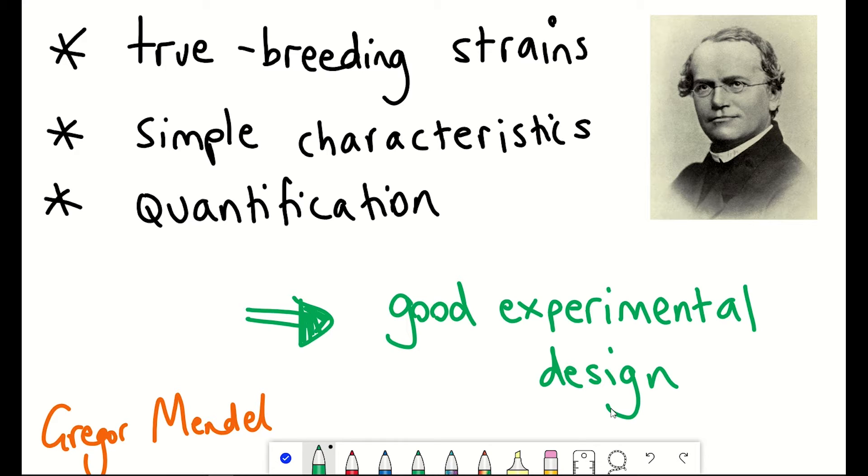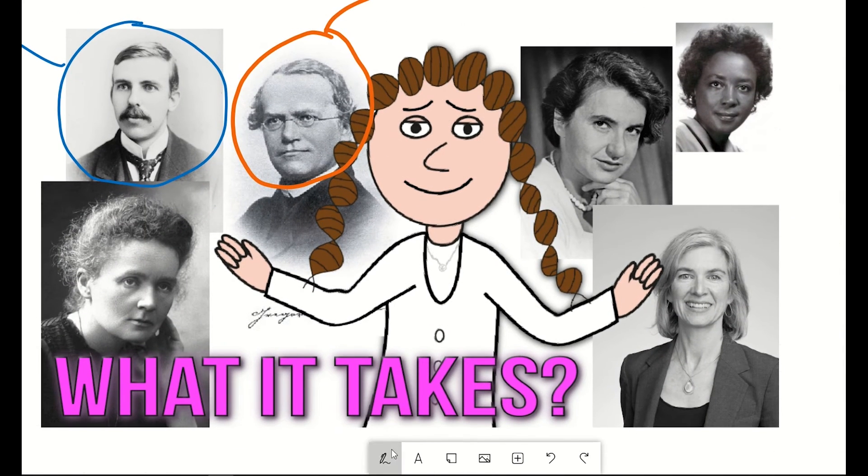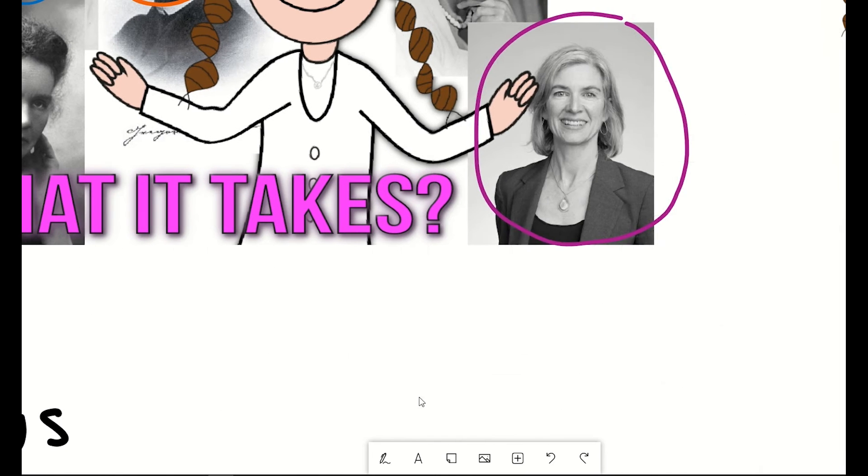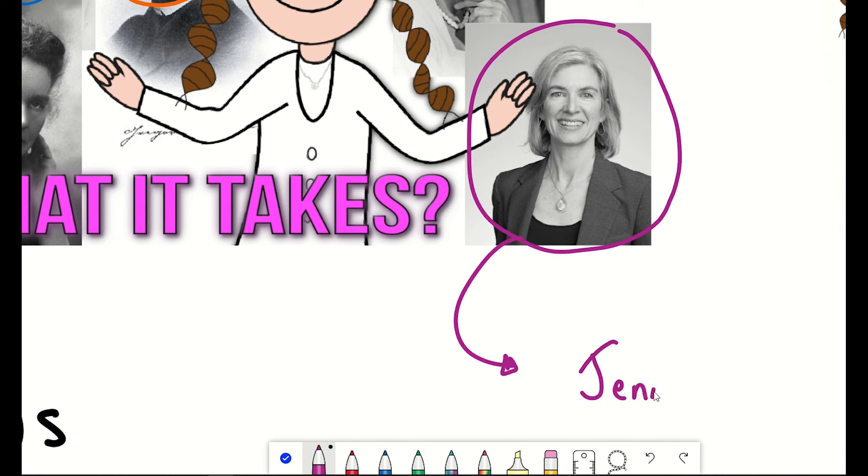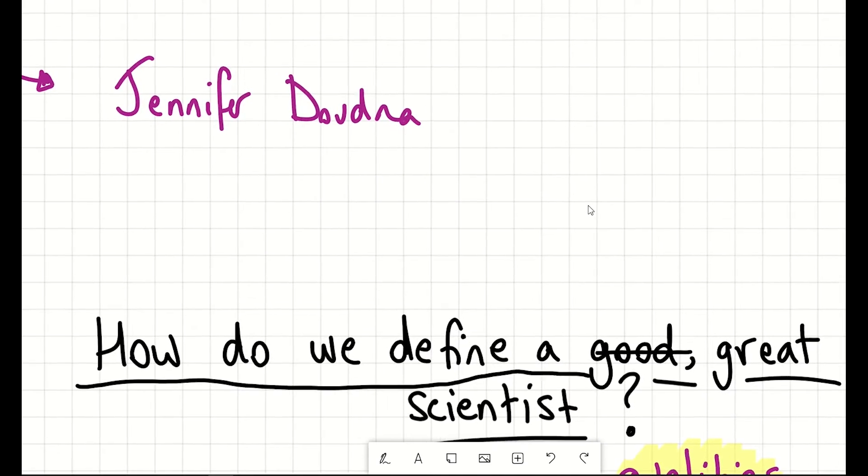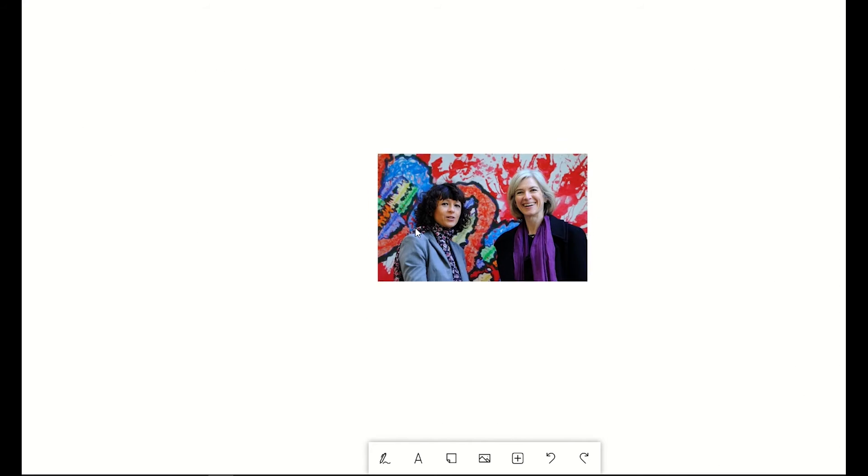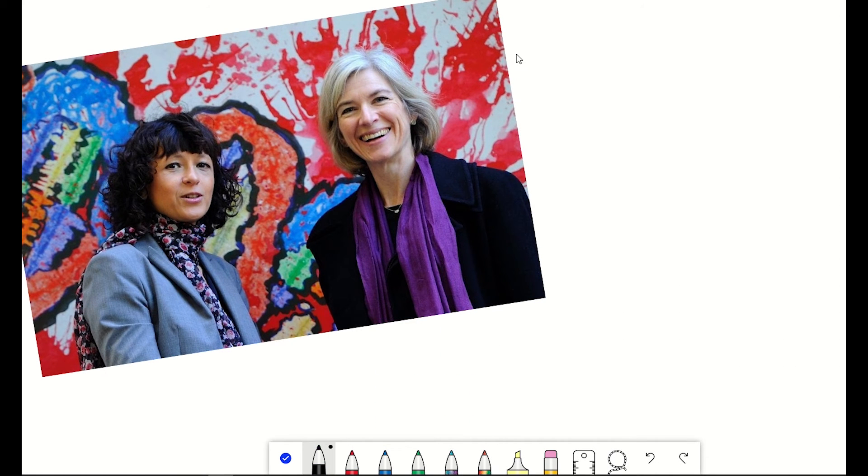But do these lessons still apply to 21st century science? Well, now we'll move from genetics to gene editing, and to the Nobel Prize winners for chemistry in 2020, Jennifer Doudna and Emmanuel Charpentier, which they were awarded for their work developing the CRISPR-Cas9 gene editing tools. It has, and continues to have, wider-reaching applications.